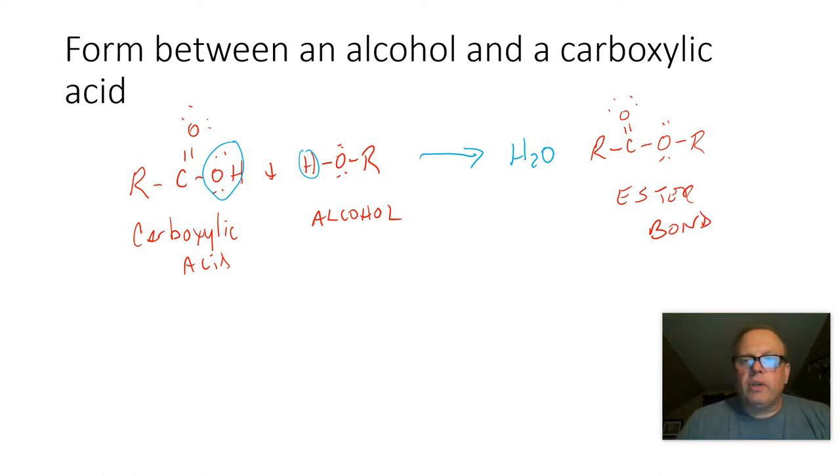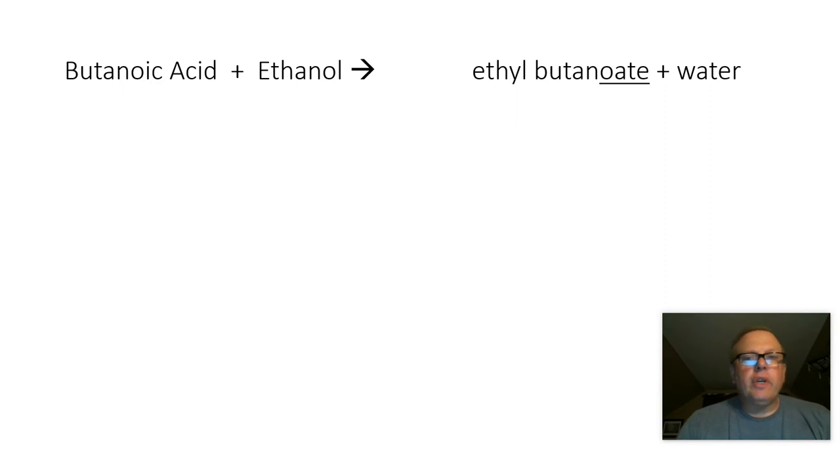That ester bond is really interesting. Many of them smell great, very flavorful. A lot of artificial flavorings in foods are formed from esters. There's no real fruit in a Jolly Rancher, it's an ester bond that is in there. We could make some cool stuff with this. It's always a fun lab to do when you make something that smells like bananas.